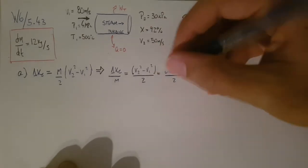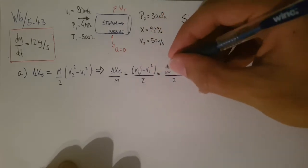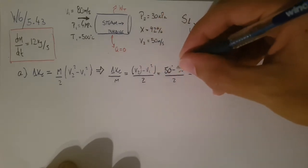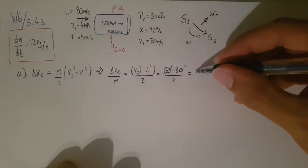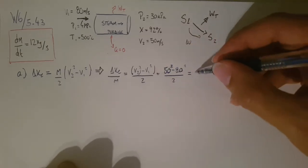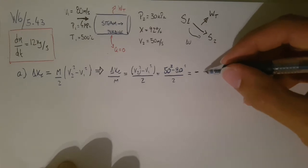So my end velocity, 2, is 50. I just flipped them. So 50 minus 80. And it's going to be a negative, right? Because we're decreasing energy. Does that make sense? So negative 1950.